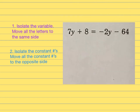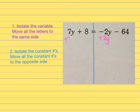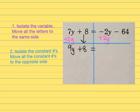Last one. I draw a line down the center to separate left and right and will isolate all the letters on the left. The opposite of negative 2Y is positive 2Y, so I add 2Y to both sides. On the left, 7 plus 2 is 9, giving 9Y. I bring down plus 8 equals and then minus 64.